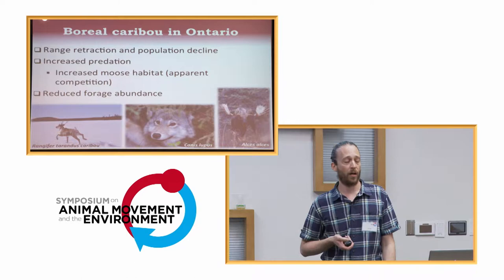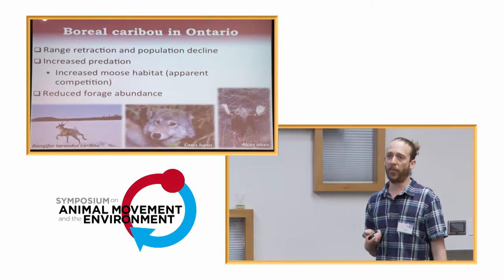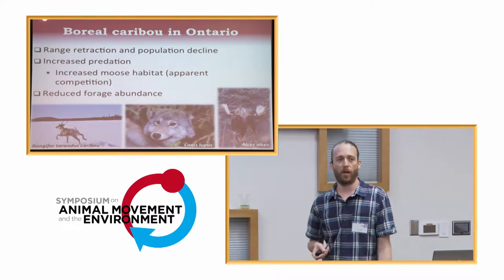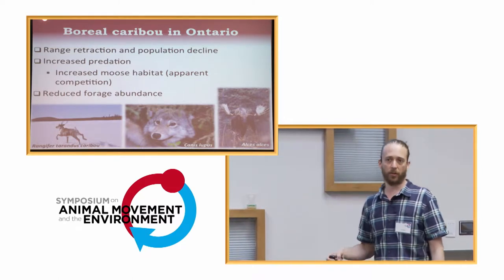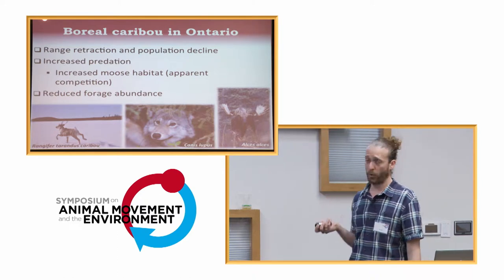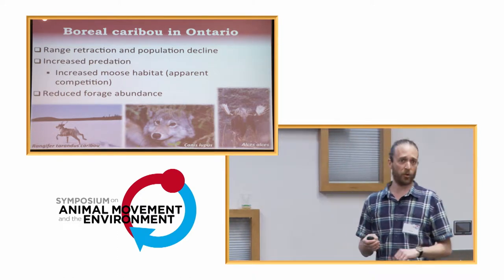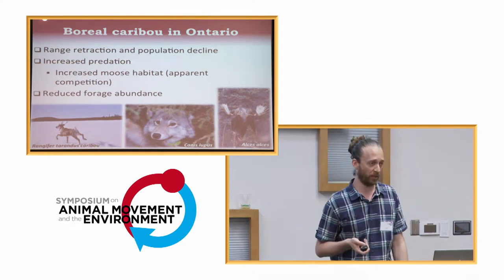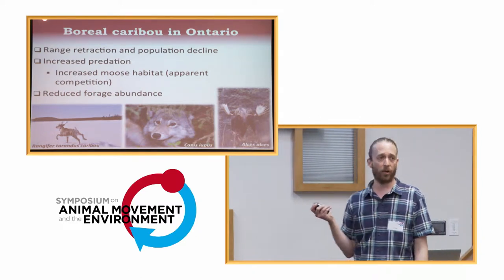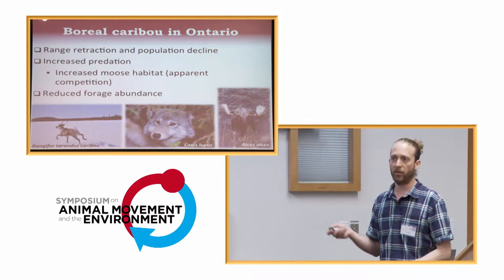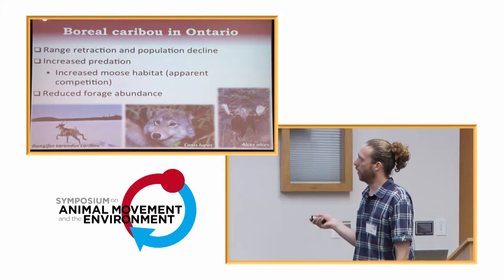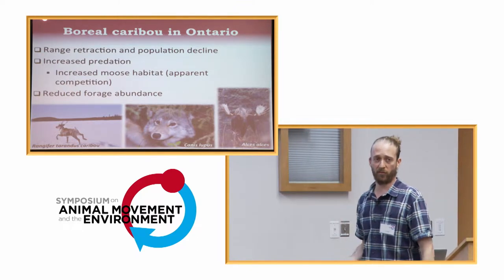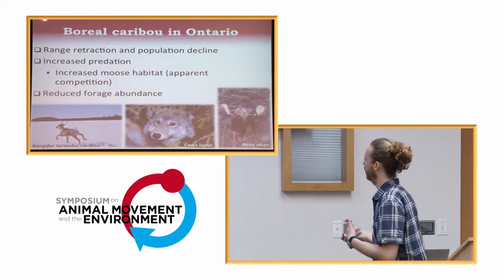So this is the apparent competition hypothesis, where the apparent competitor is the moose. And obviously there's an alternative or additional cause that I have to say is less popular, at least in the community that studies caribou, and that is reduced forage abundance. Caribou feed mainly on lichen, but on a lot of other things. And obviously that's a possibility for a population decline. They just don't have enough resources. So bottom up versus top down if you want.